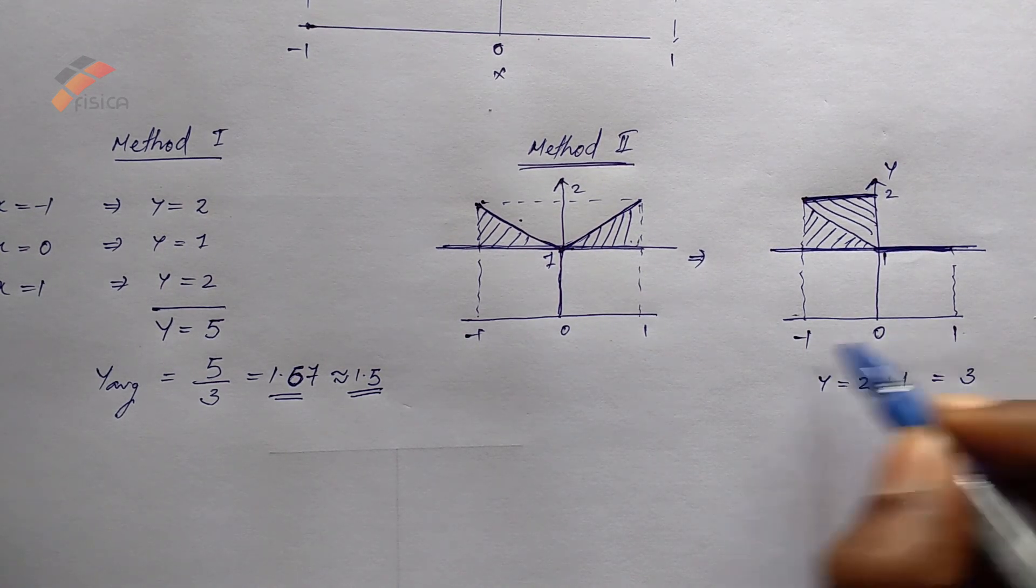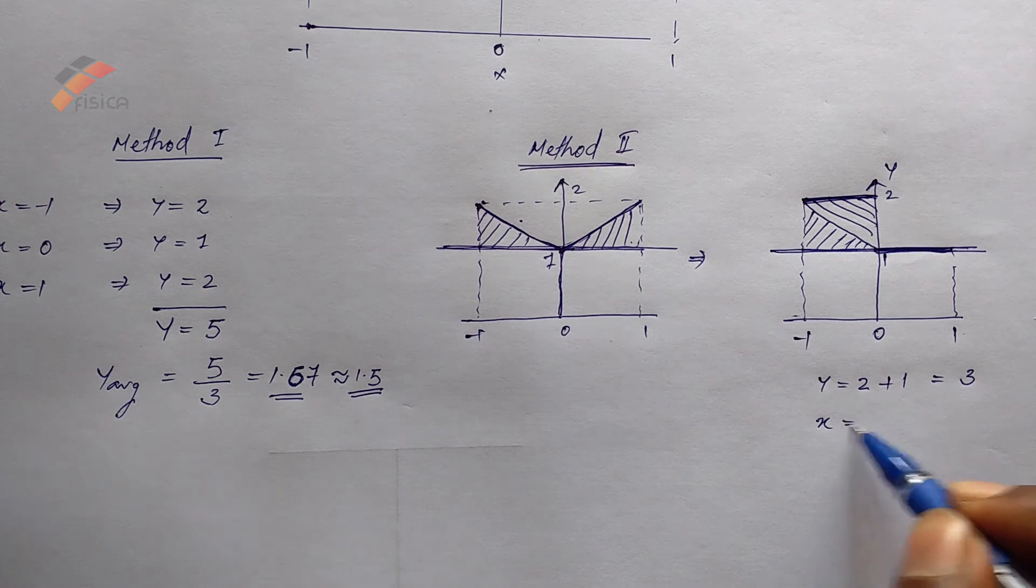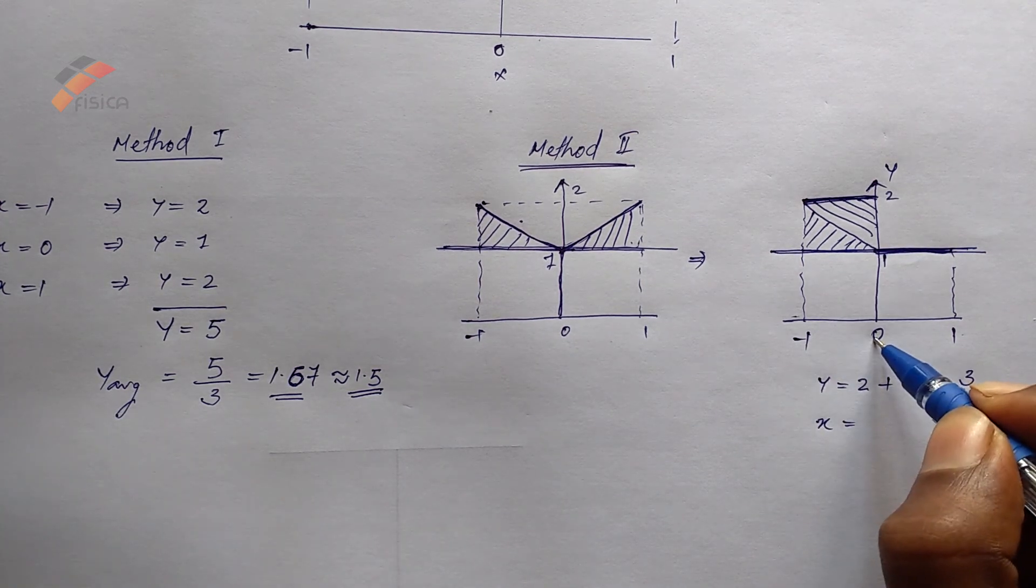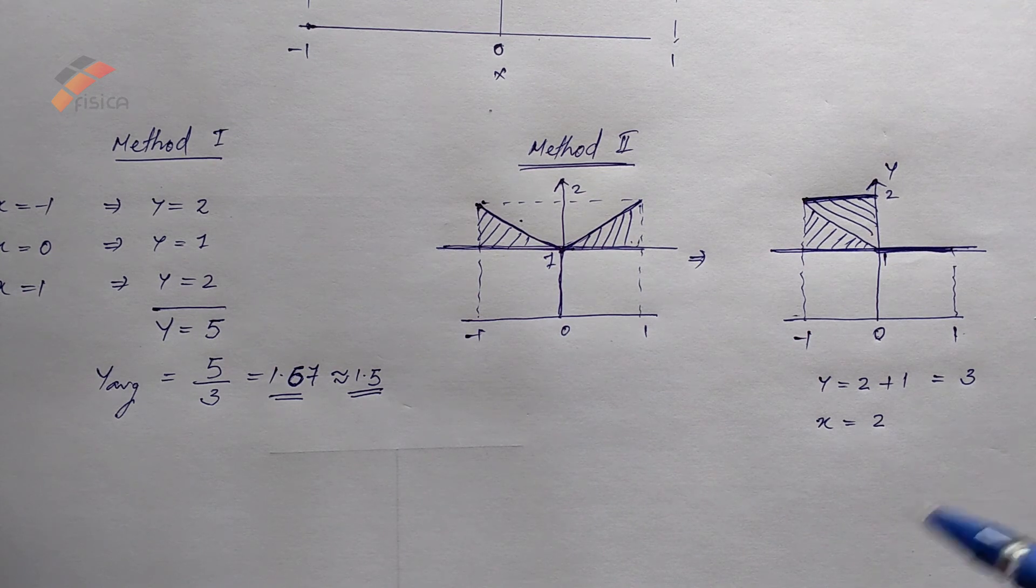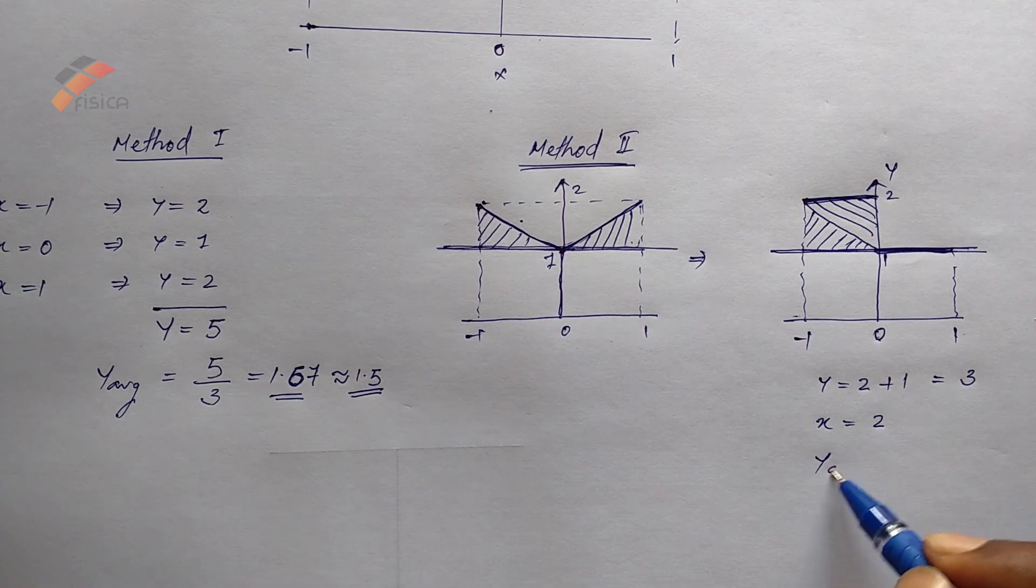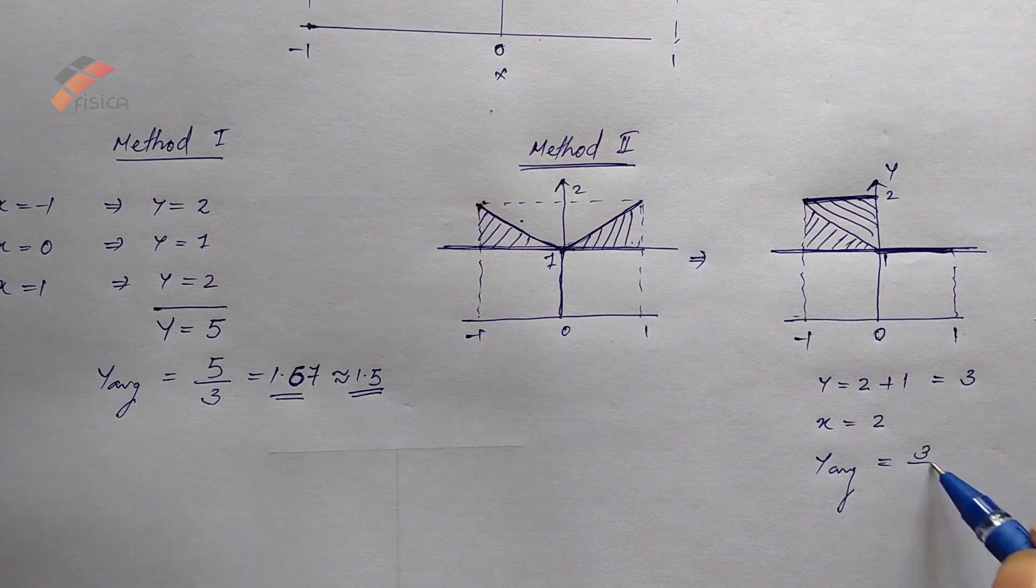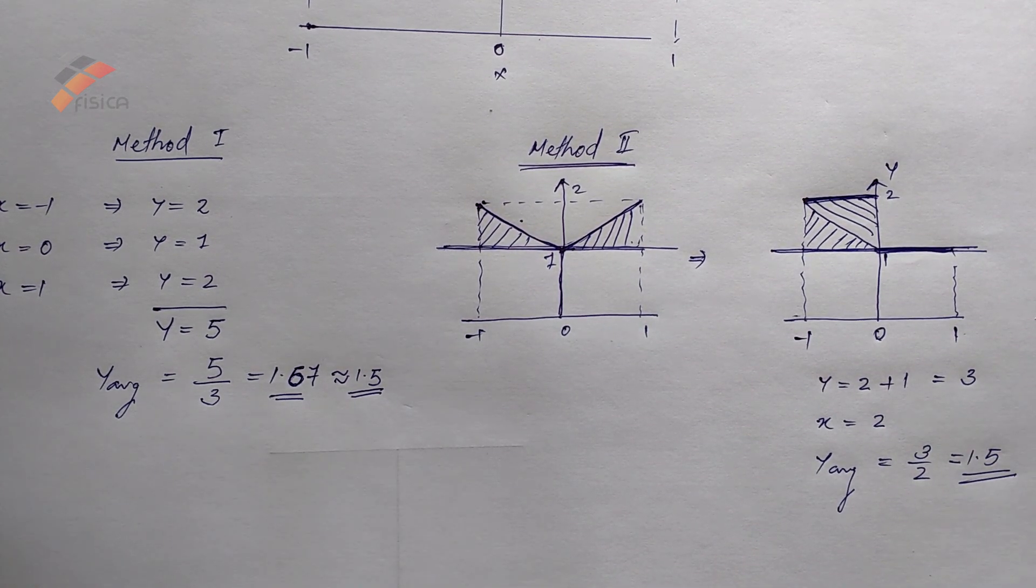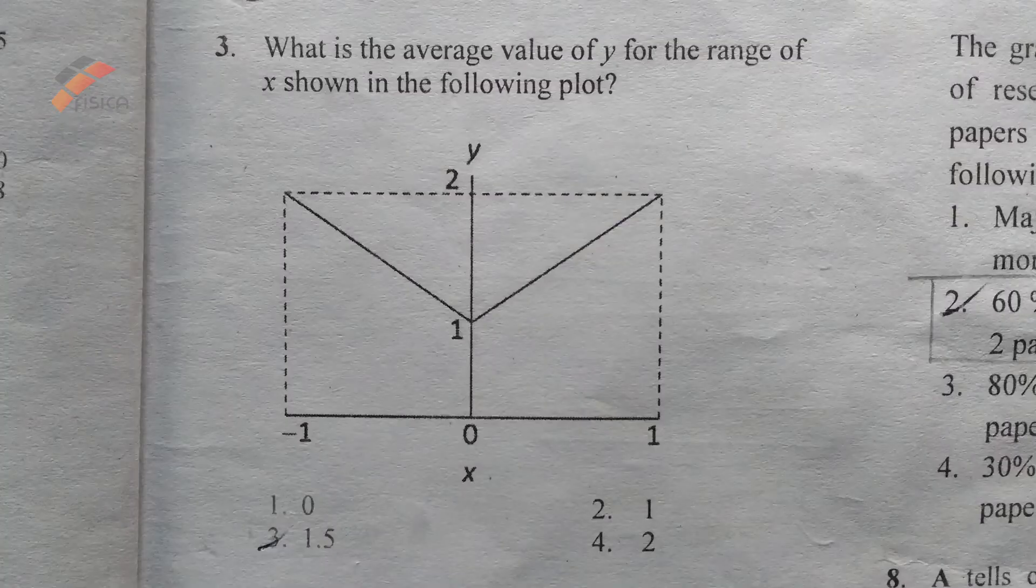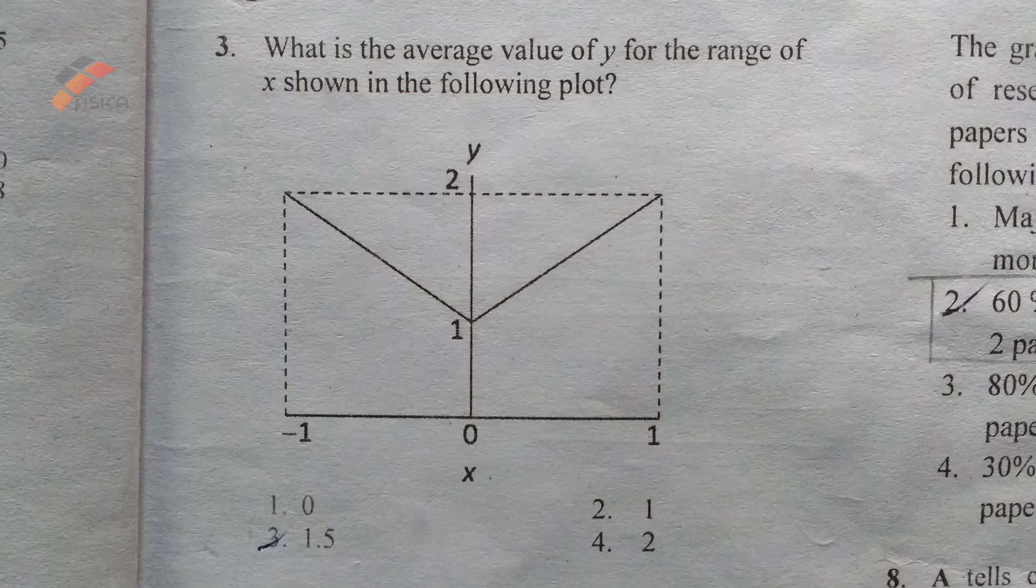Now, what is the total x value? That is x equal to minus 1 to 0 plus 0 to 1, that is 2. So, the average y value equal to 3 by 2, that is equal to 1.5. So, third option is the right answer.